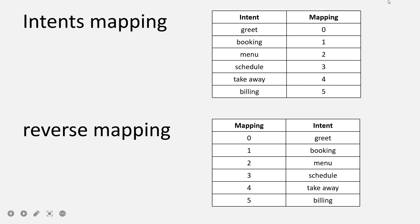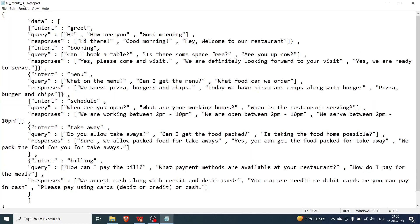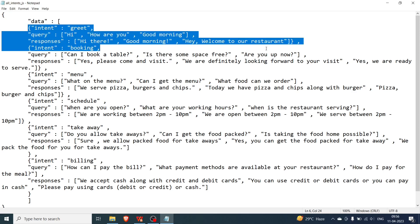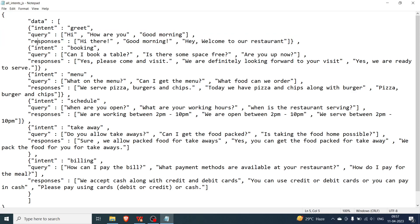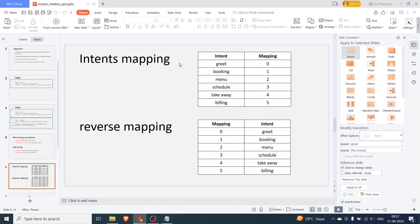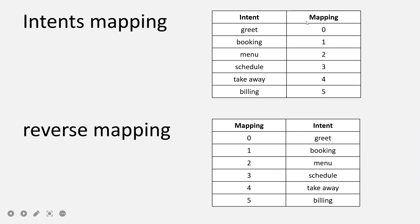So what is intents mapping and what does it mean? Basically, if you remember, our intents JSON file had elements with intent, query, and responses. The intents were greet, booking, menu, schedule, takeaway, and billing — so there were six of them. What we are going to do in intents mapping is assign a numeric value to each of these. The reason is that computers do not understand words, they understand numbers, and this will be very important later when we train the model. Intents mapping basically takes the intent and maps it to a number.